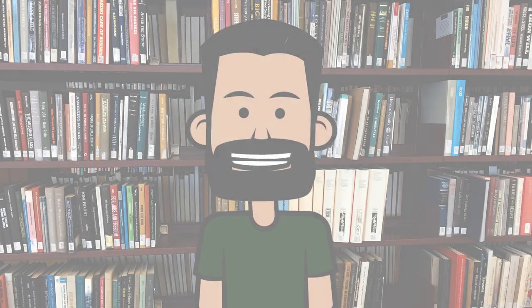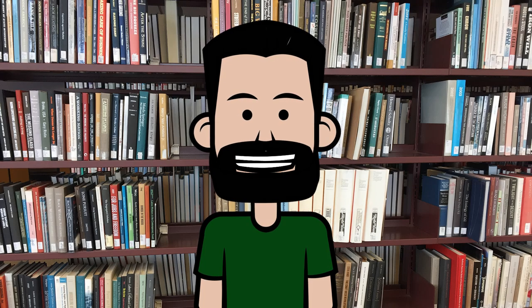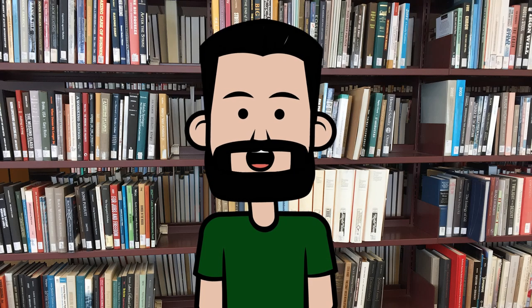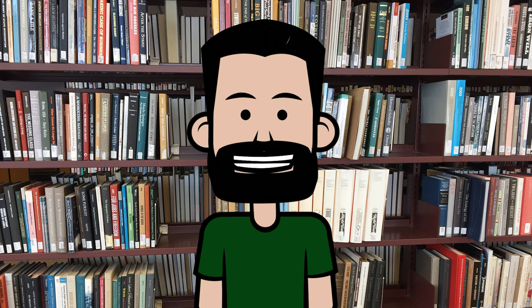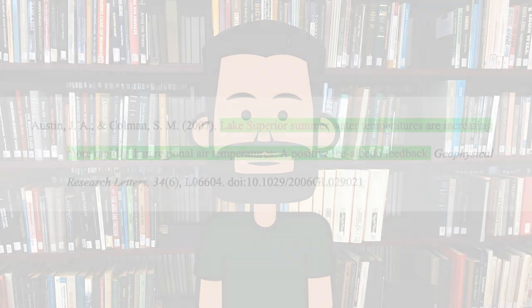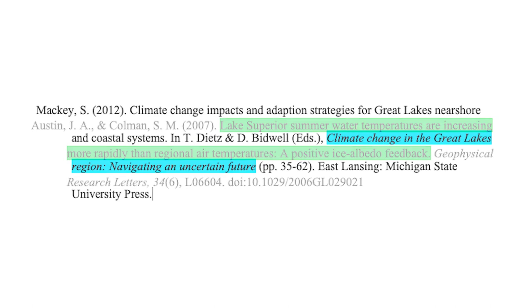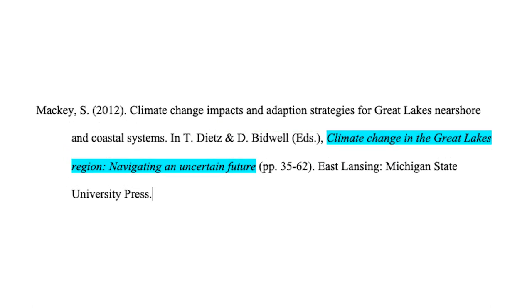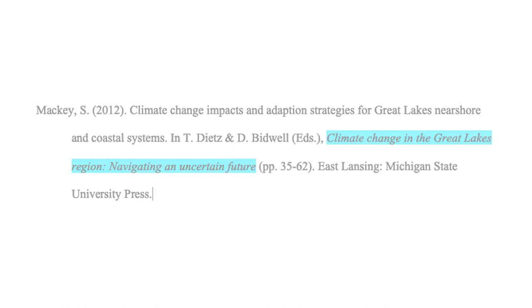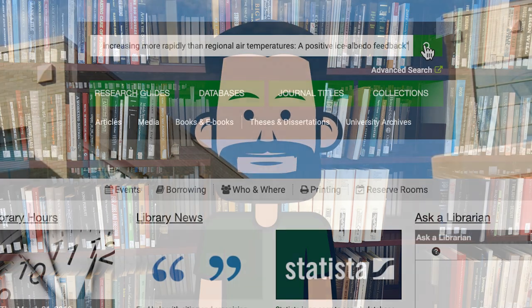Now what I really need from this information differs a bit depending on whether I'm looking for an article or a book. If I'm looking for an article, I'm going to need its title or the article information portion of the citation. If I'm looking for a book or a book chapter, I'm going to need the book's title or the italicized portion of the publication information. I want to take this information and run a search for it in eSearch, surrounding it with quotes.